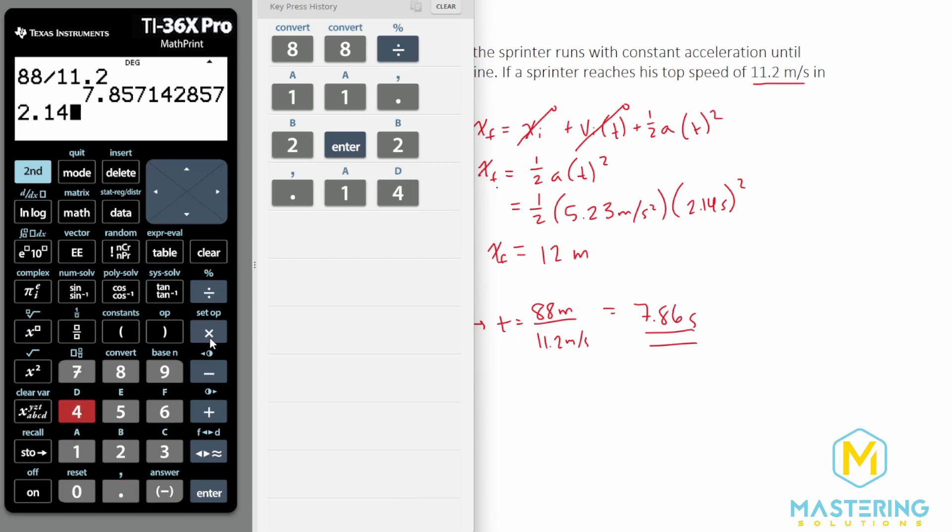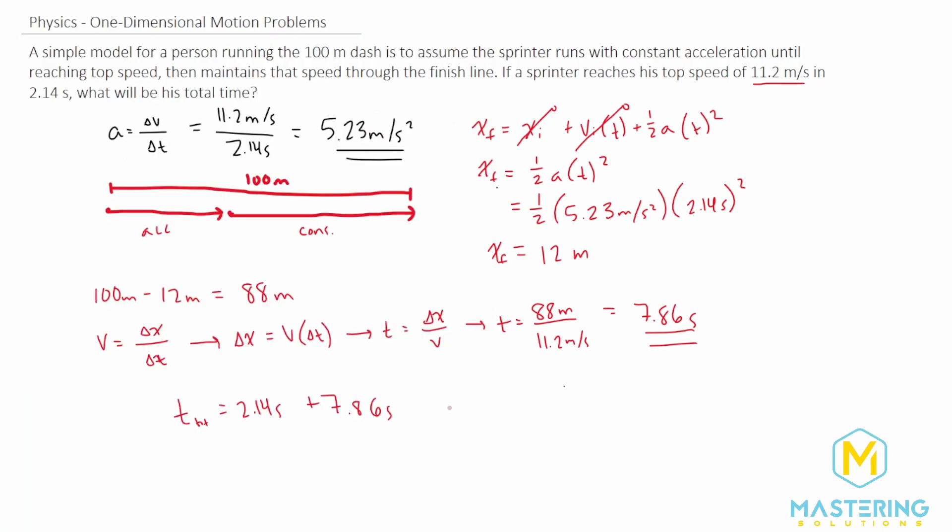So 2.14 plus 7.86 gives us a total time of 10 seconds even. The total time for this runner for the 100 meter dash is 10 seconds flat.